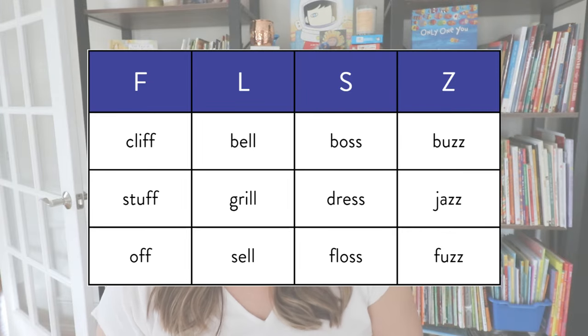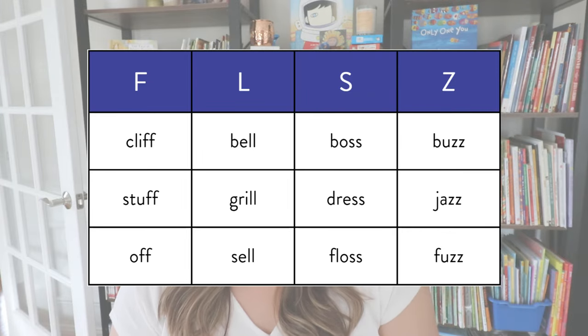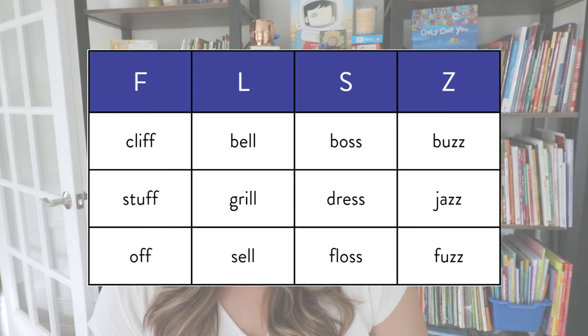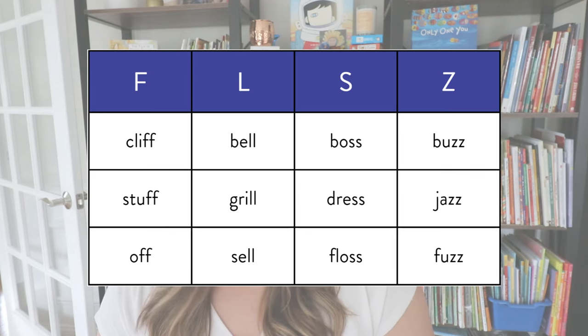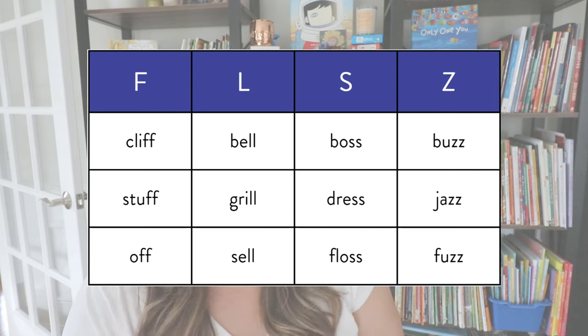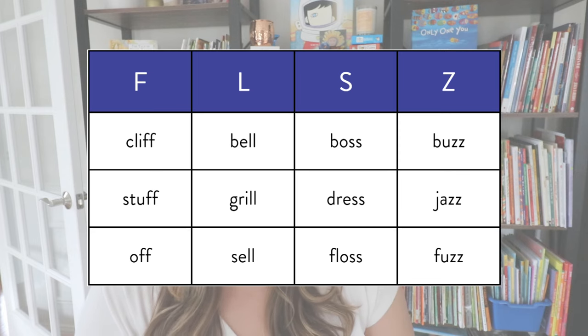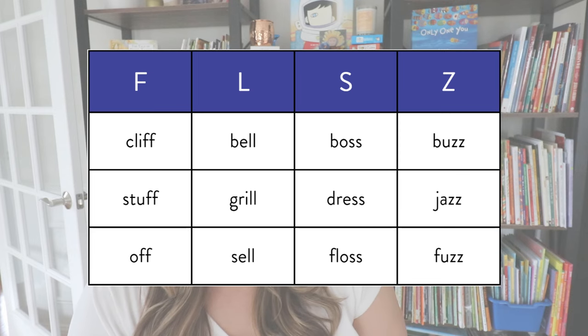Here are some quick examples. For F, we have cliff, stuff, and off. Ending with double L, we have bell, grill, and sell. Ending in S, we have boss, dress, and floss. And ending in Z — there are not too many — but we have buzz, jazz, and fuzz. That is not a comprehensive list; there are plenty of other words.